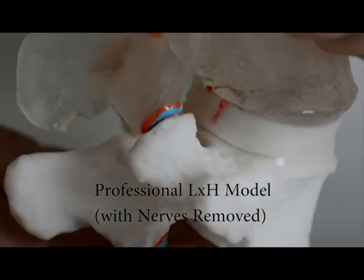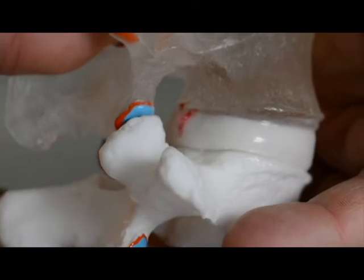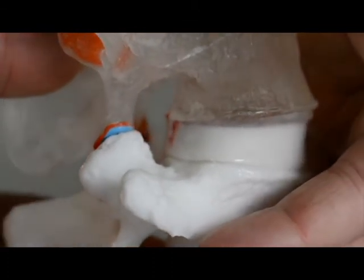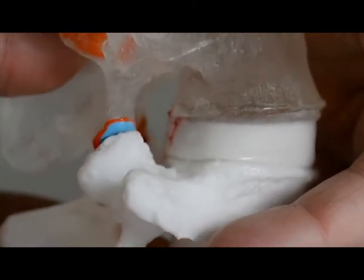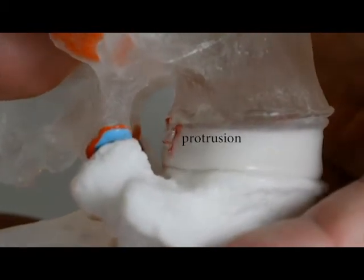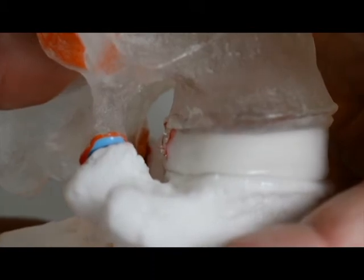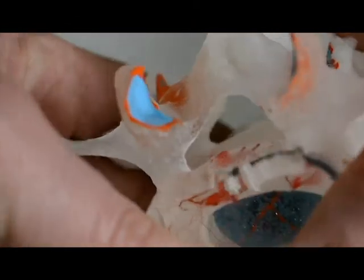The second model in this group is our professional LXH model, and with the nerves removed, you can show how a protrusion can present itself under manual compression and slight flexion. This can also be visualized in the spinal canal and in the lateral recess.